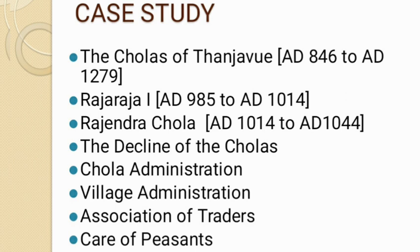Next is associations of traders. The organizations of traders — such as craftsmen and other vocational groups — were known as Nagaram, and they protected the tax interests of their members.